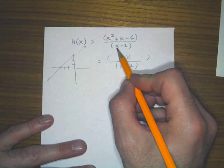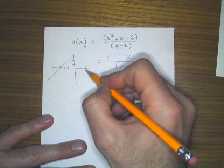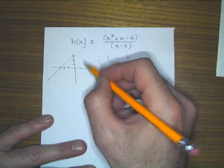Look. At two, two minus two is zero. We should have an asymptote here. But you know what? We don't get one.